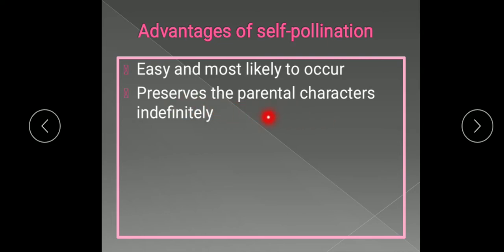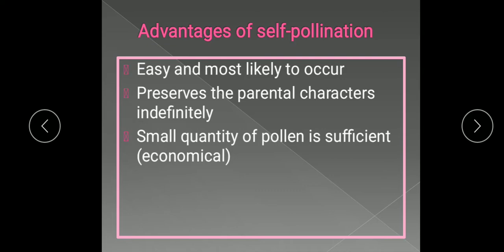The gametes of the same flower or flowers of the same plant have a similar genetic constitution, so the parental characters are preserved and the same characters are transmitted to the offspring. A small quantity of pollen is also sufficient because pollen grains do not need to travel a long distance. This method is therefore known as an economical method — the plant does not need to expend more energy.